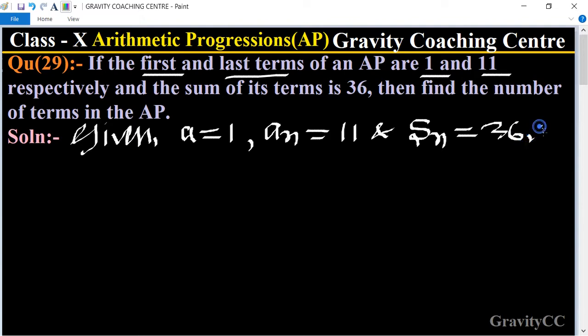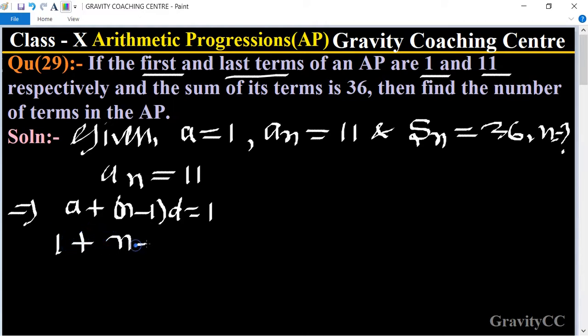So find n equals what. Here, a_n equals 11, and we know that the formula of a_n equals a plus (n minus 1)d equals 11. The value of a equals 1, so 1 plus (n minus 1)d equals 11.